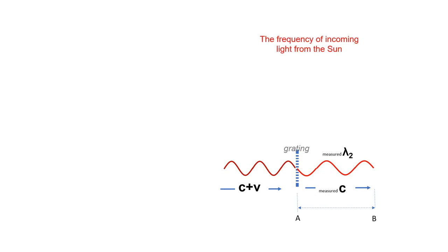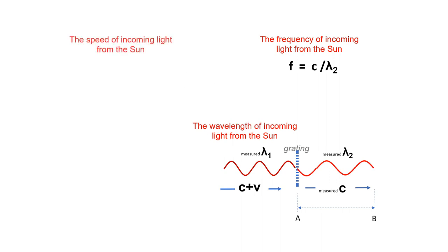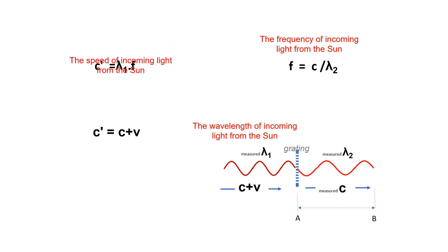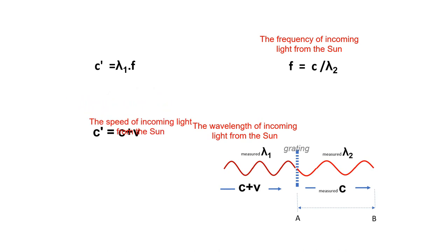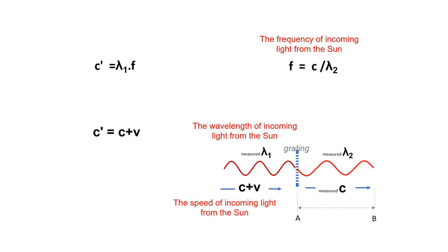Let's repeat. The frequency of incoming light from the sun is known. The wavelength of incoming light from the sun is known. The speed of incoming light from the sun is known. The measured speed of light coming from a moving light source is C plus V, where the constant C describes the speed of light from a stationary light source, and V the speed of movement of the light source. The measurement is unambiguous and can be carried out at any time in many astronomy laboratories.